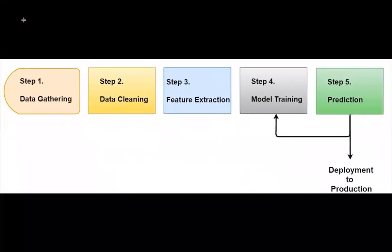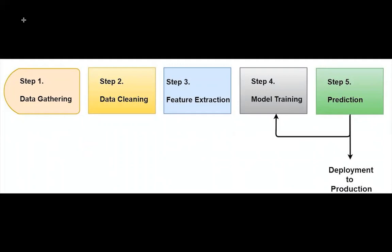Now I'll show you the end-to-end machine learning workflow, exactly what I follow when working with models in production. There are five steps: step one — data gathering; step two — data cleaning; step three — feature extraction; step four — model training; step five — deployment. Mathematics and statistics are applied especially in step two and step three, to clean the data, extract the data, and give the cleaned dataset to the model for training.